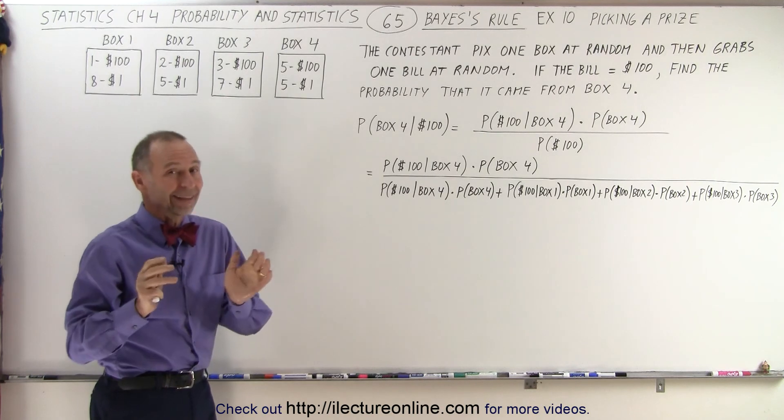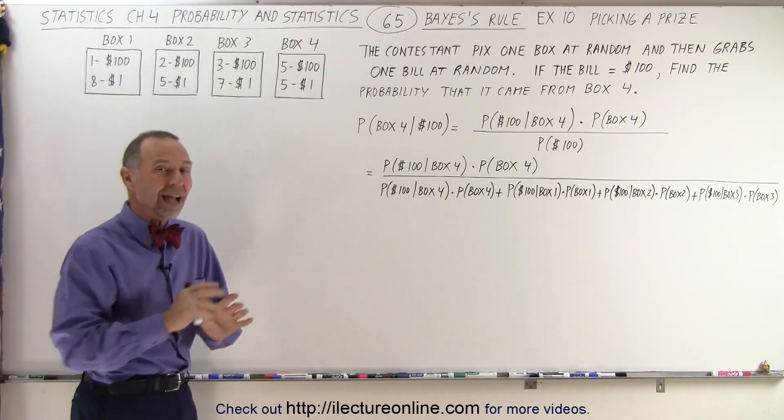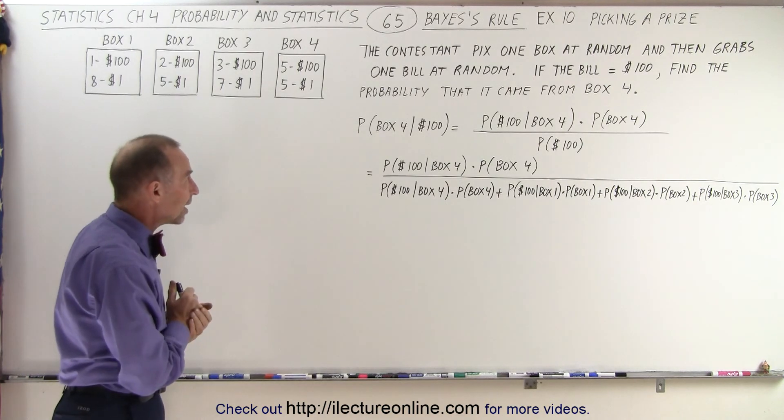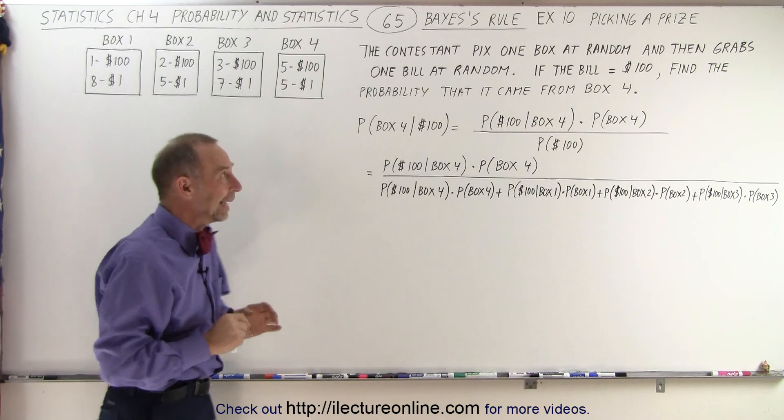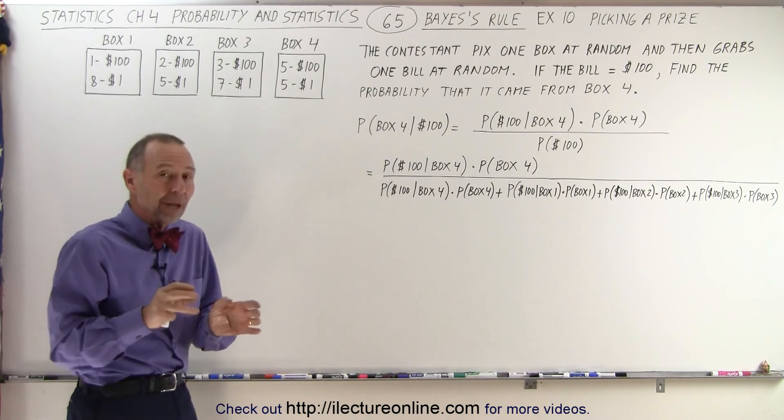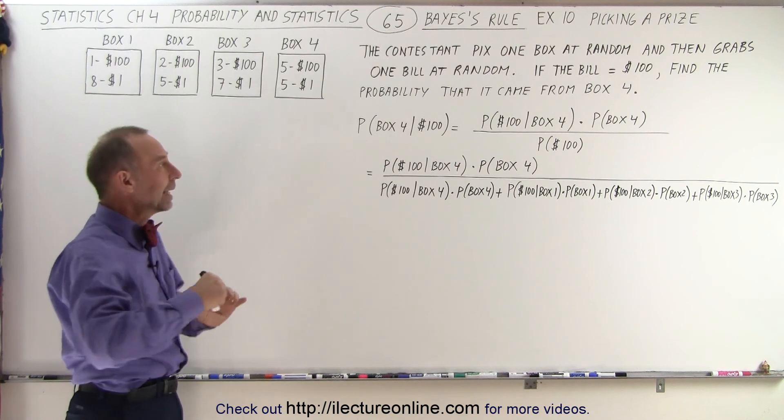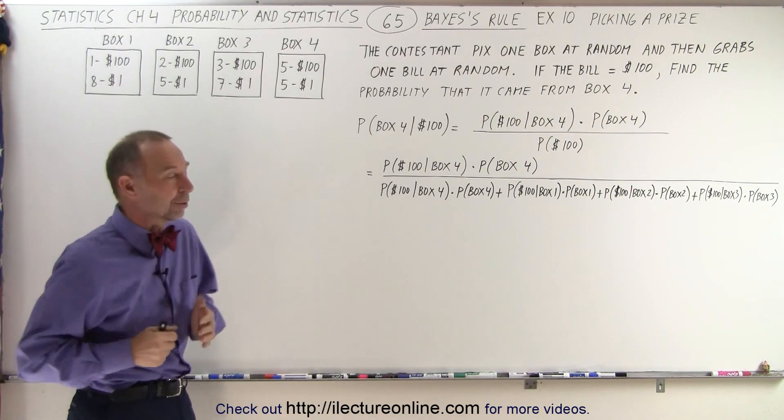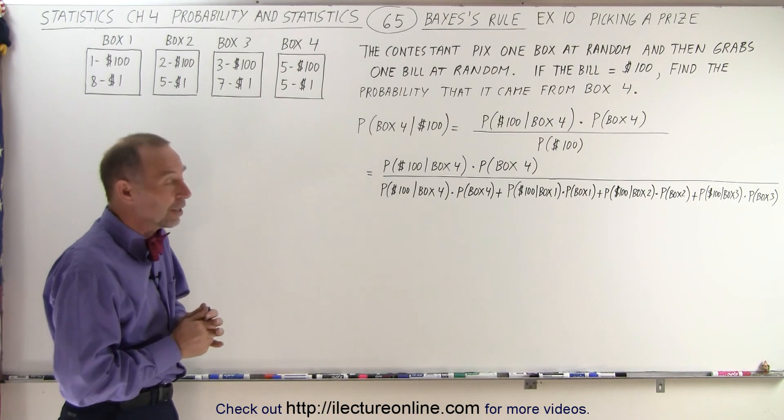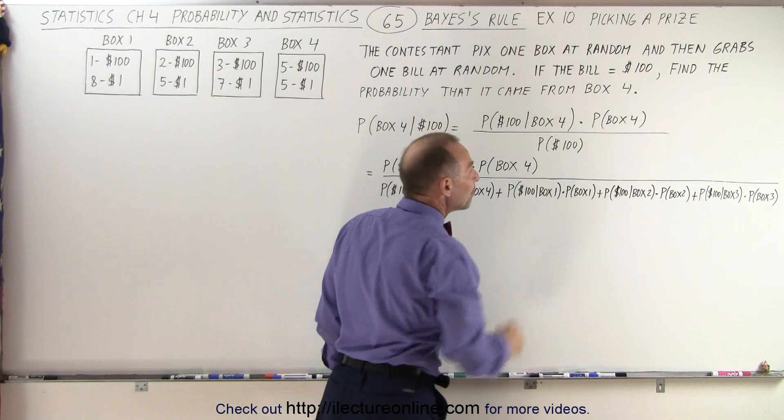And of course the contestant does not know how many of each type of bills is in each of the boxes. So the contestant will pick a box at random and then will pick a bill at random without knowing what's in it, just kind of feeling around, picking out a bill. And let's assume that the bill that the contestant pulled out was a $100 bill.